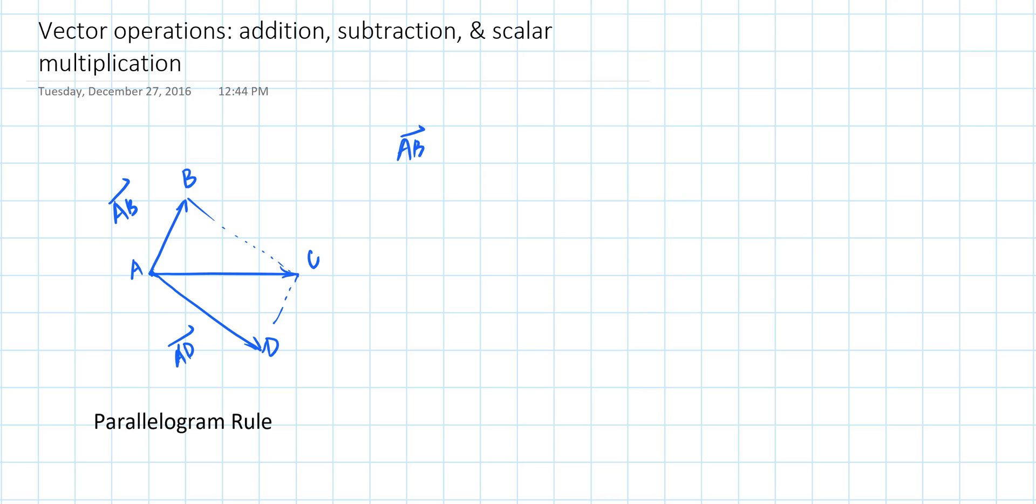So in this example, vector AB plus vector AD is equal to vector AC, where ABCD is a parallelogram.